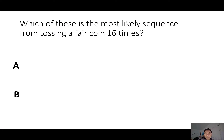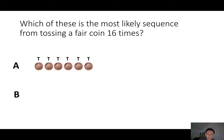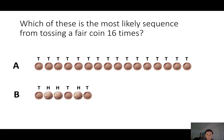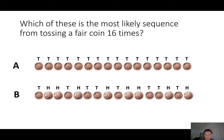Now that we've got this understanding of independent events, we can answer questions like this: which of these is the most likely sequence from tossing a fair coin 16 times? This one where we get 16 tails, or this one where we get kind of an almost random sequence of heads and tails?